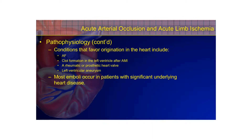Arterial emboli can travel to a variety of sites in the body, but most lodge in the femoral artery, and most emboli occur in patients with significant underlying heart disease. A clot in the femoral artery will cause a decrease in oxygenated blood flow distally — the patient could have paresthesia, a cold leg, pallor, or even cyanosis and mottling. These are all signs and symptoms of a blood clot distally.